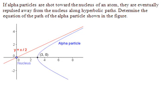If alpha particles are shot toward the nucleus of an atom, they are eventually repulsed away from the nucleus along hyperbolic paths. Determine the equation of the path of the alpha particle shown in the figure.